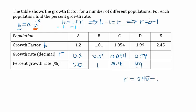And we can even do the same thing with this last growth factor. 2.45 minus 1 is 1.45, or 145%.